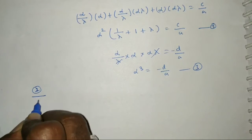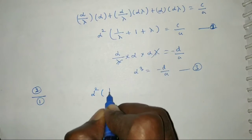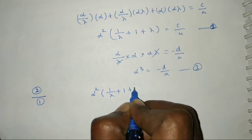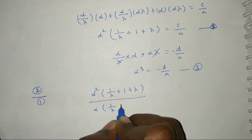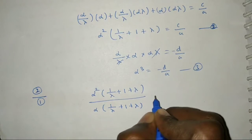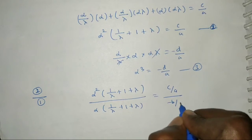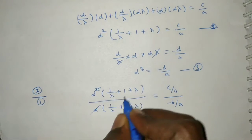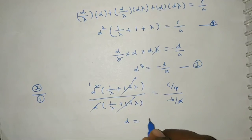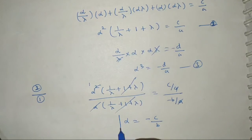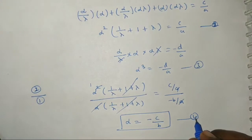Dividing equation 2 by equation 1: α²(1/λ + 1 + λ) divided by α(1/λ + 1 + λ) equals (c/a) divided by (−b/a). The common factors cancel, giving α = −c/b. This is equation 4.